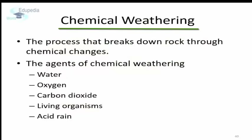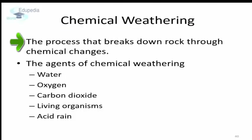Chemical weathering is the breaking up of rocks by chemical means. Here, the broken pieces of rocks differ in composition from the parent rock. Chemical weathering is common in rocks which contain weak minerals such as salts, which easily dissolve in water and are washed away, making the rock weak and causing its disintegration. The agents of chemical weathering are water, oxygen, carbon dioxide, some living organisms, and acid rain.